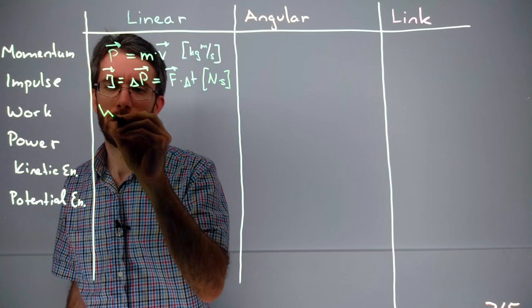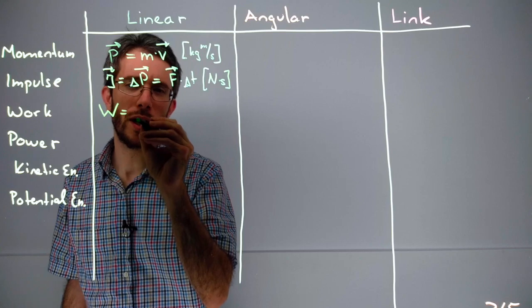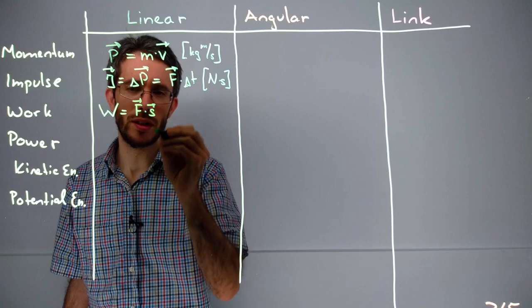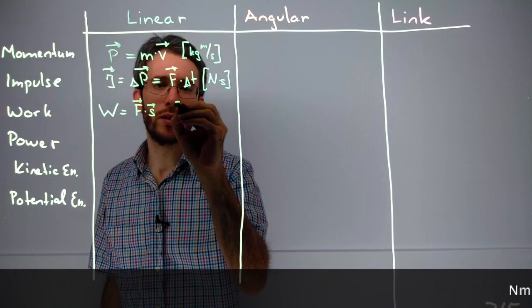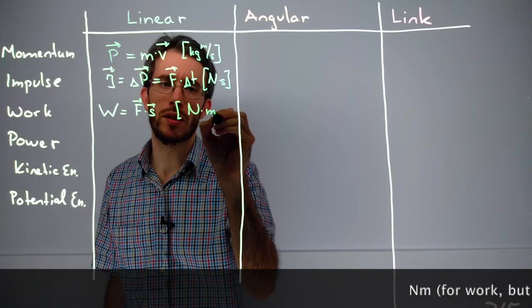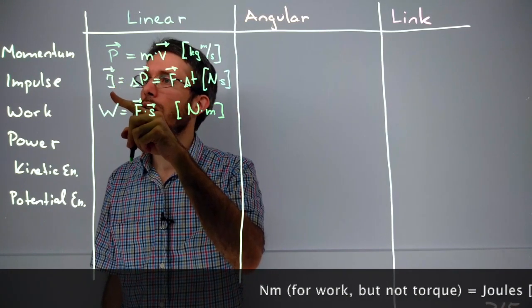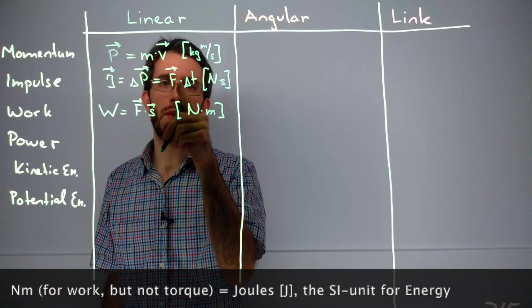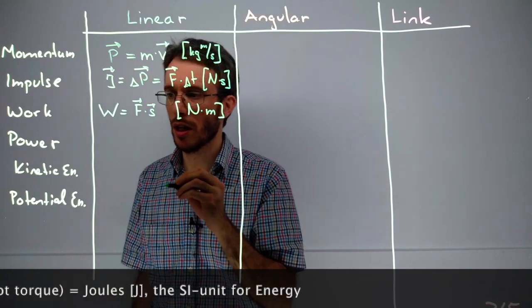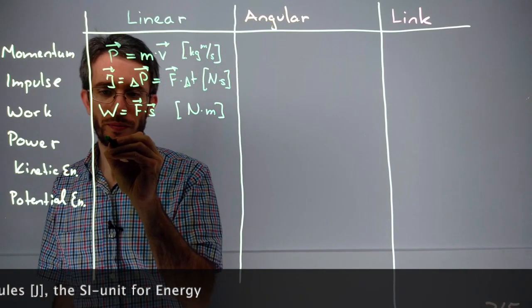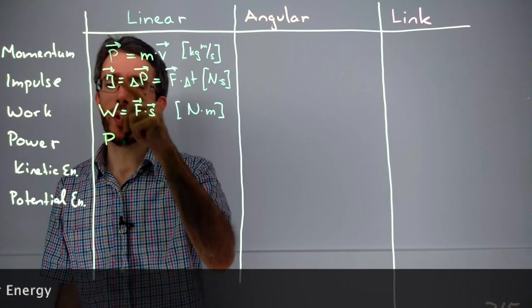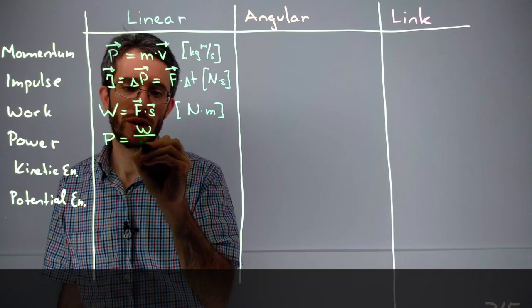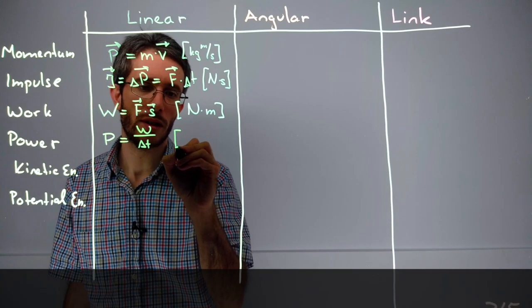Work was calculated as the dot product between F and s as being the distance traveled. So here we get newton times meters. You see the difference between impulse to change momentum and work to change energy. This time is force times time, and here it's force times distance traveled. And next one, power, P, don't confuse the momentum p with power P, it's two different entities. It's work over time, and the SI unit is watts.